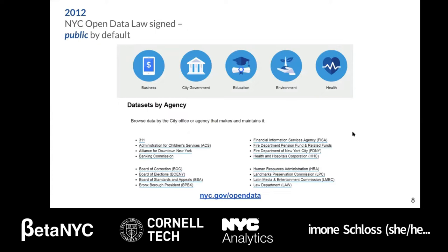2012 witnessed the passage of New York City's open data law. Unlike FOIL, where you have to ask for the information, New York City's data sets by agency are made public and shared with everyone by default. And unlike cities where open data may be a policy or executive order, access to New York City's open data is guaranteed to the public in perpetuity, regardless of the administration. You can reach the website at nyc.gov/opendata.